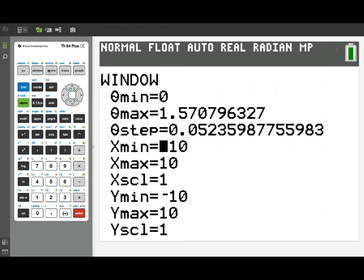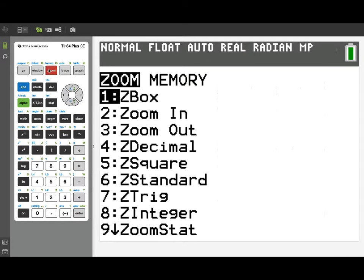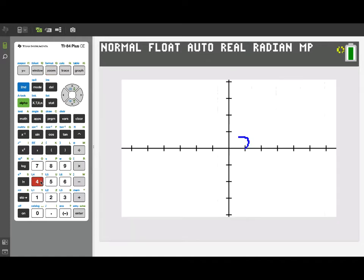Now for the window dimensions itself, let's go ahead and use the zoom menu. We'll start out at least with a zoom decimal window. There we've got a nice graph of the two curves, but it's kind of small. So we're going to make a little bit of an adjustment here.